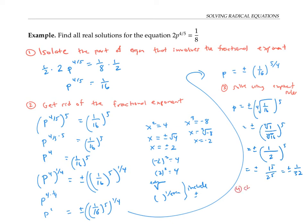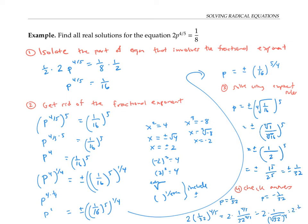The last step is to check both answers: p equals one thirty-second and p equals minus one thirty-second. Plugging in one thirty-second to the four-fifths power: two times one to the four-fifths over 32 to the four-fifths. The fifth root of 32 is 2, raised to the fourth power gives 16, so this is two times one-sixteenth, which is one-eighth — exactly what we wanted. Similarly, p equals negative one thirty-second also satisfies the equation.